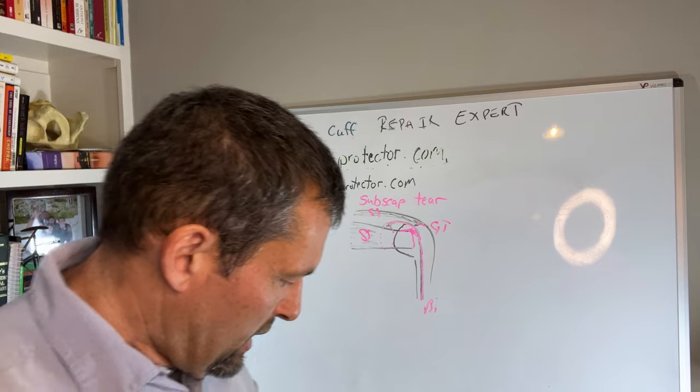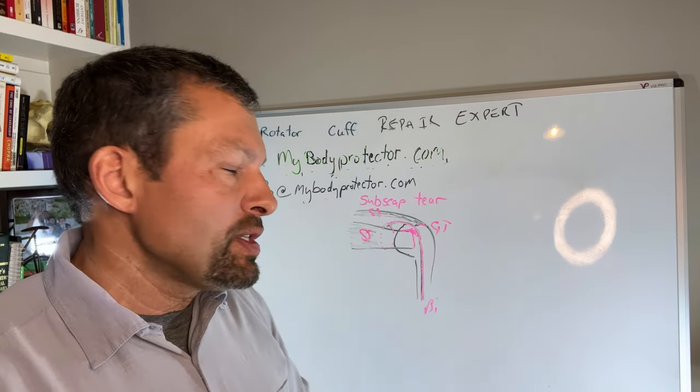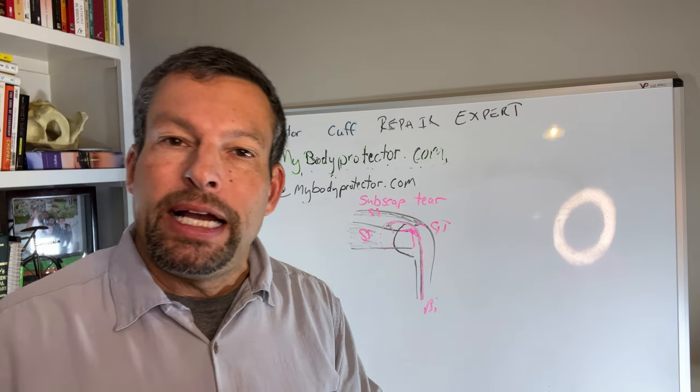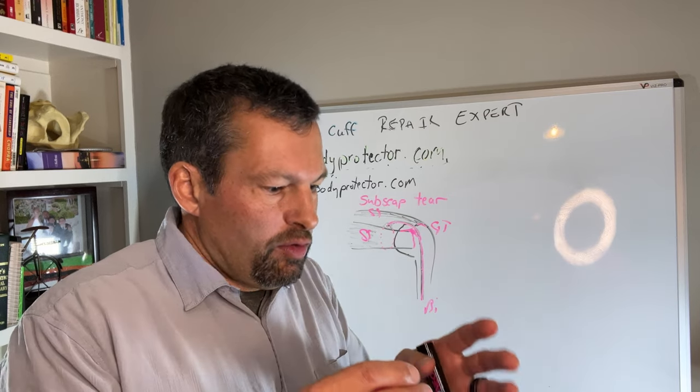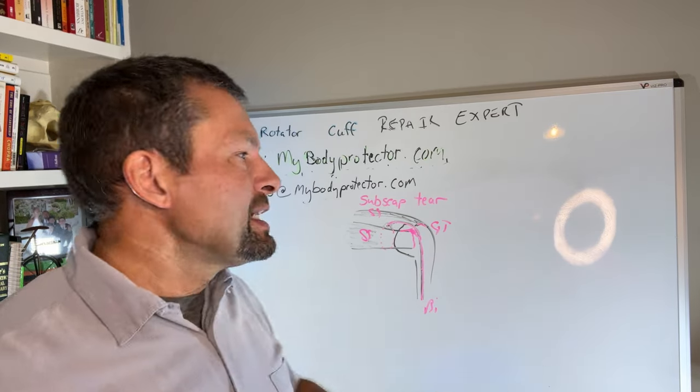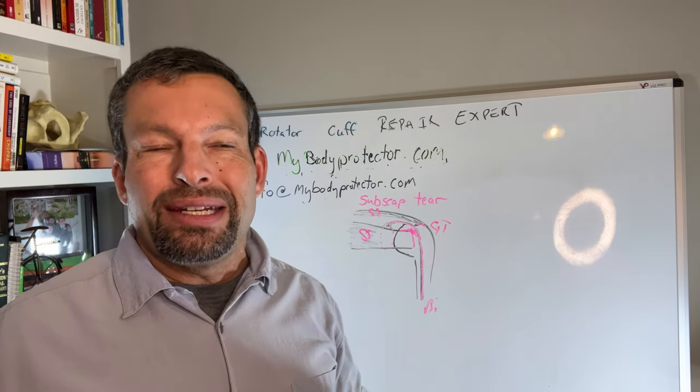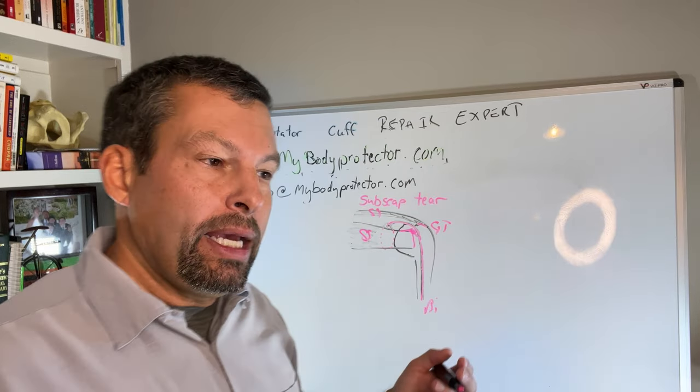The problem is if you have a complete tear of the subscapularis, it's very, very difficult, in my opinion, impossible. I'm sure there's some orthopedic surgeon who does a lot of scopes and specializes in subscapularis that thinks that they can repair all of the subscapularis through the scope. I actually don't think you can, but maybe there's some, or at least I can't, maybe there's somebody out there who can.